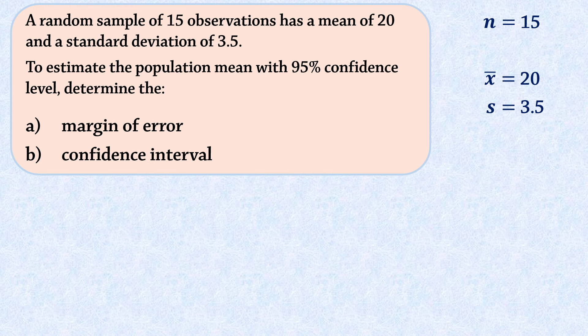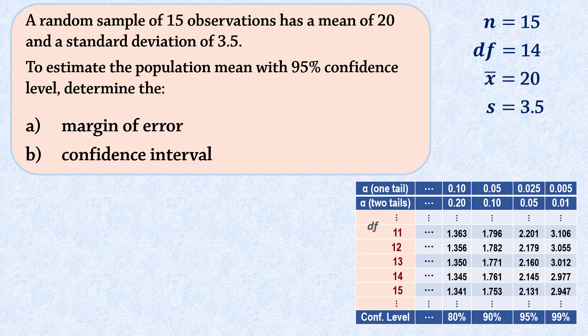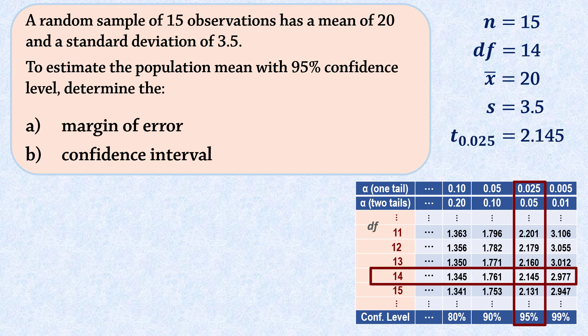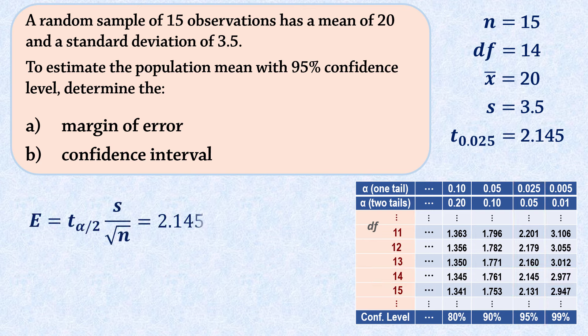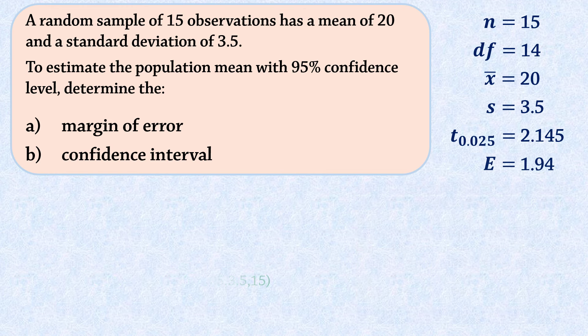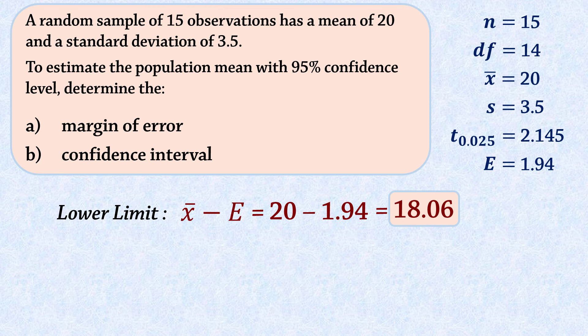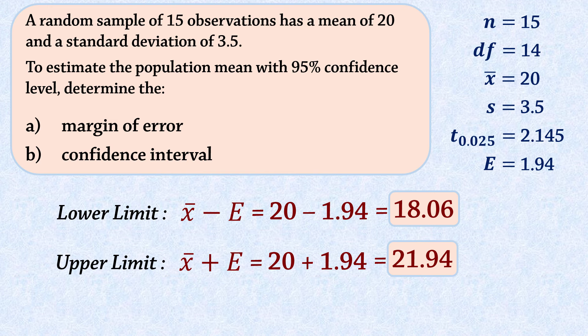Now, for n equals 15, degrees of freedom n-1 is 14. So, for 95% confidence or alpha 2 tails 0.05, the critical value is 2.145 at 14 degrees of freedom. The margin of error is therefore about 1.94. The lower limit of the confidence interval will be the sample mean minus the margin of error, and the upper limit will be the sample mean plus the margin of error.